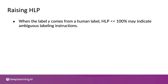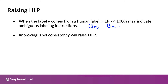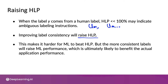To summarize: when the ground truth label comes from a human, HLP being much less than 100% may simply indicate that the labeling instructions or convention is ambiguous. You also see this in speech recognition, where choices like comma versus ellipsis cause inconsistency. Improving label consistency will raise human level performance, which makes it harder for your learning algorithm to beat HLP — but the more consistent labels will raise your ML algorithm's performance, which is ultimately likely to benefit the actual application.